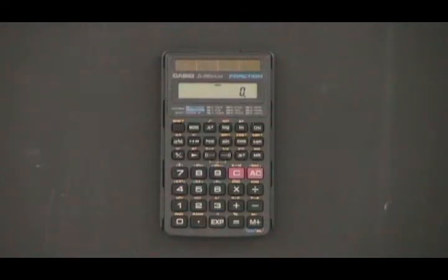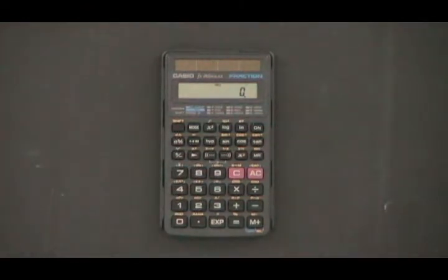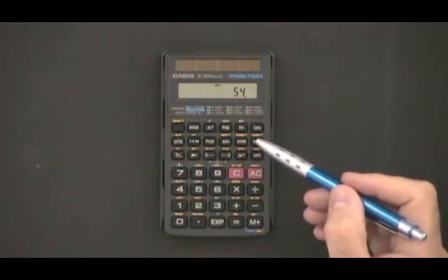The third and last of the special buttons we use in trigonometry is the TAN button. You can enter an angle like 54 degrees and find its tangent by pressing this button.